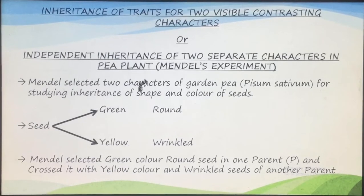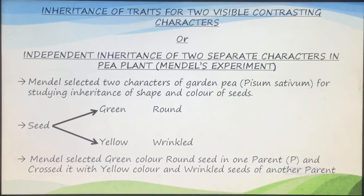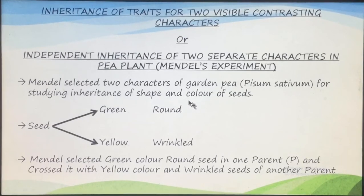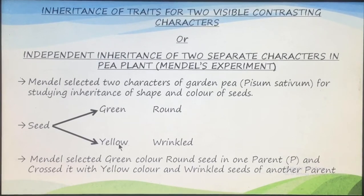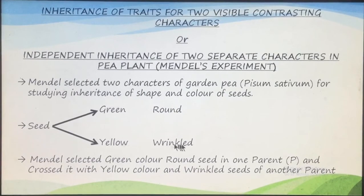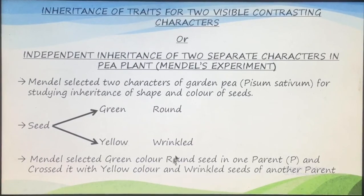Mendel selected two characters of the garden pea, that is Pisum sativum. We have already discussed the seven characters on which Mendel worked. For the dihybrid cross, he took two characters: one is the color of the seeds — either the seeds were green or they were yellow — and the shape of the seed — either the seeds were round or they were wrinkled. Mendel selected these two traits in the parental generation.